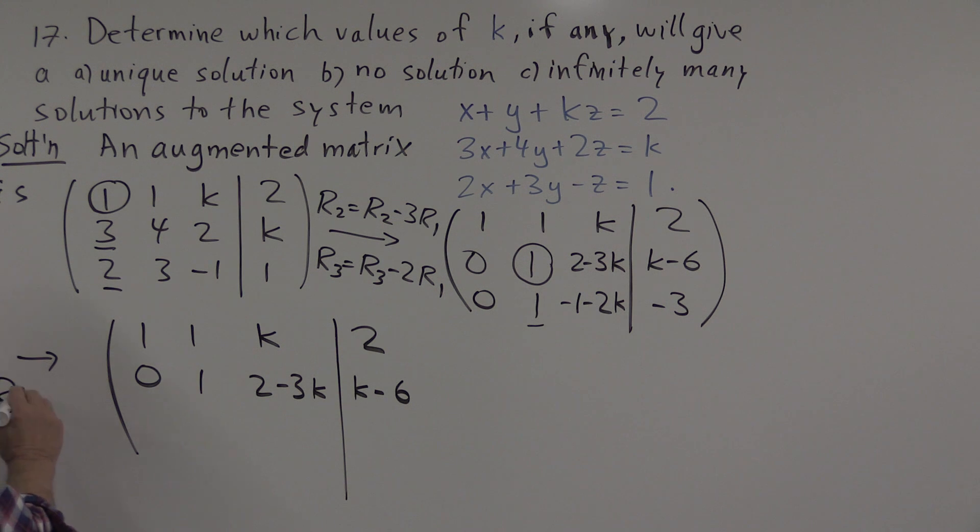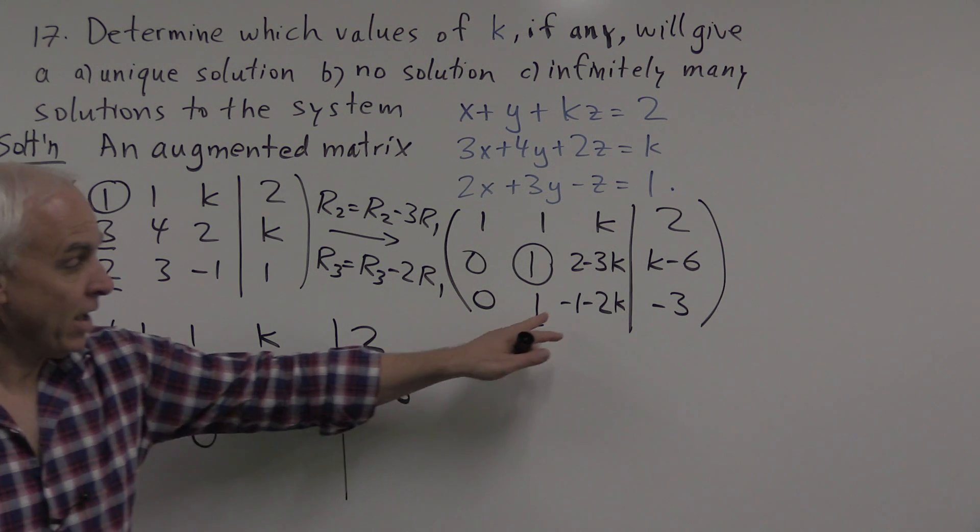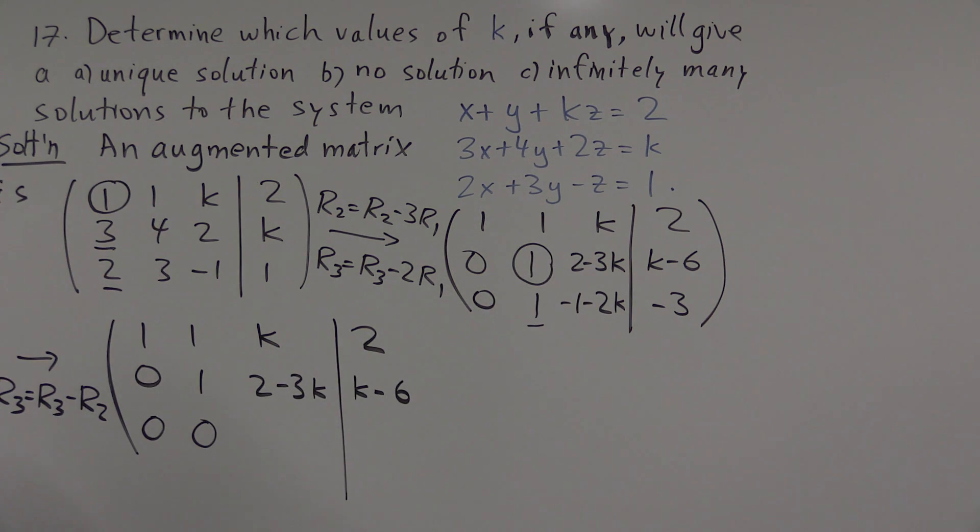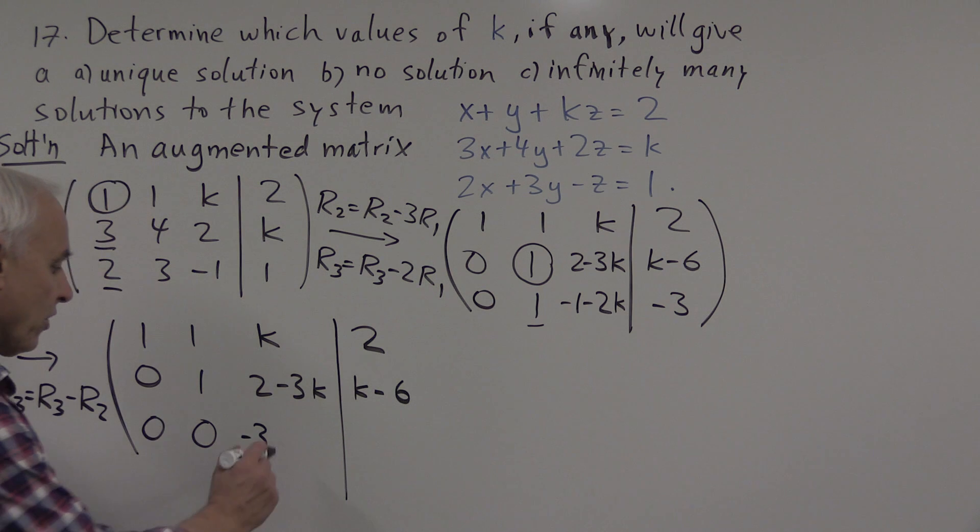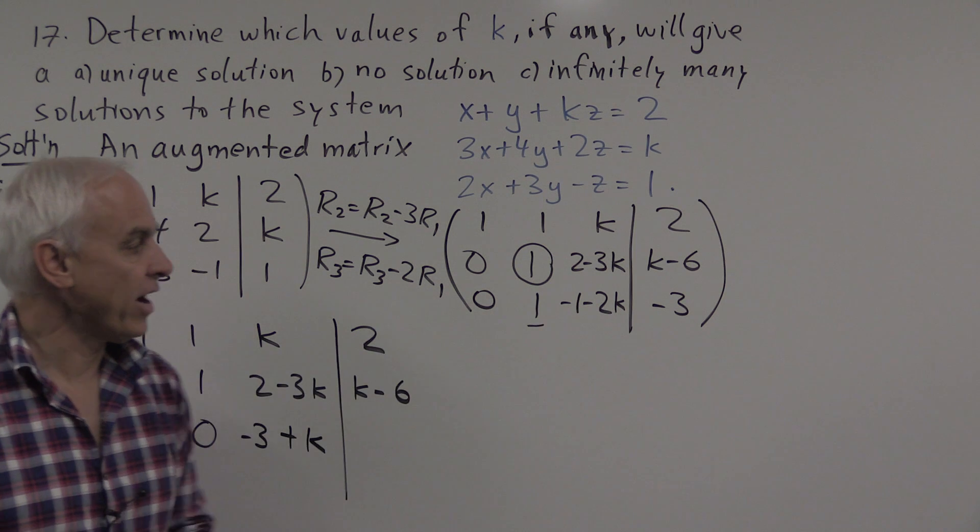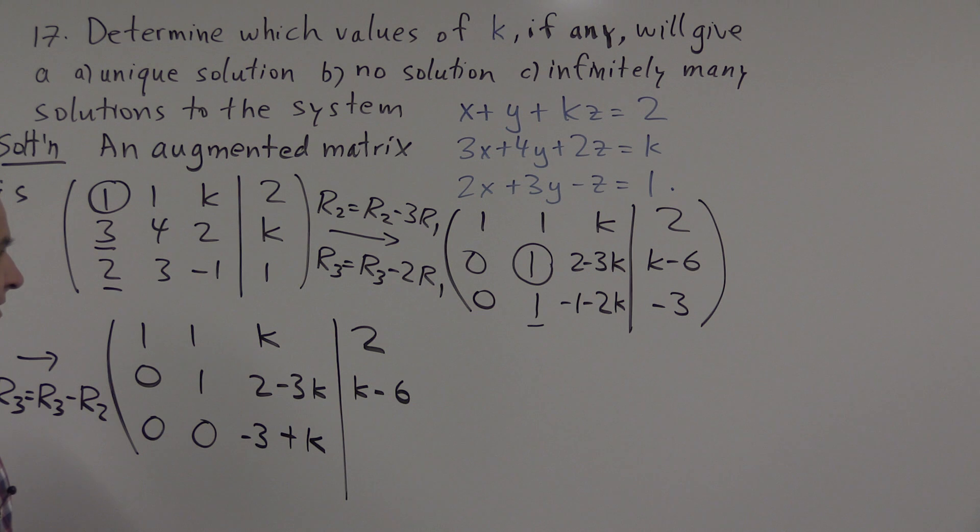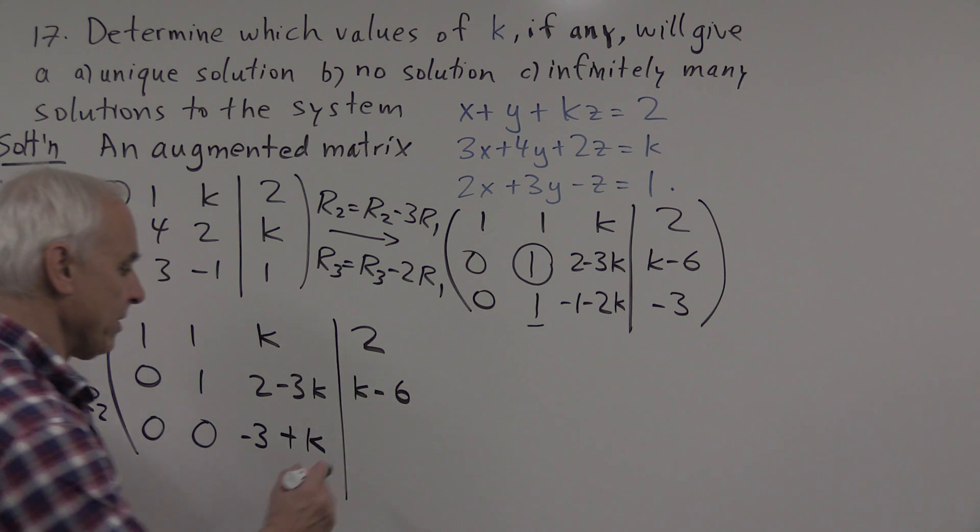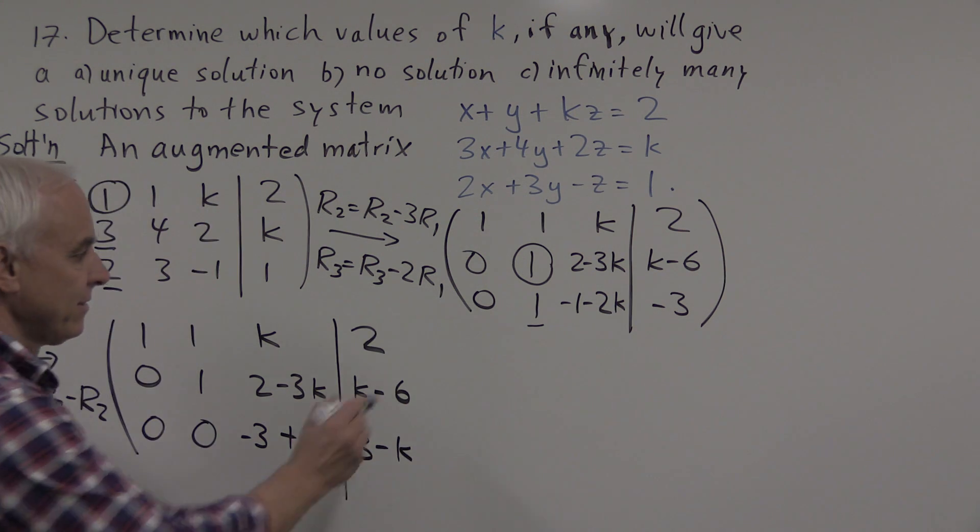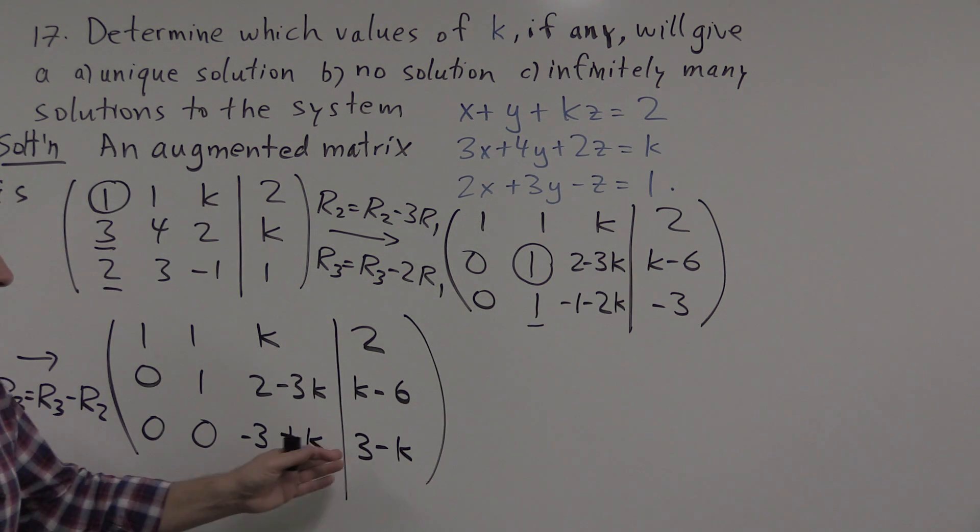We're going to take row 3 minus row 2. That'll give us 0. 1 minus 1 is 0. And then over here, we have minus 1 minus 2k minus 2 minus 3k. Minus 1 minus 2 will be minus 3. And minus 2k minus minus 3k will be minus 2k plus 3k for a total of plus k. And then over here on this side, we'll have minus 3, and then we have to subtract k minus 6. So minus 3 minus k minus 6, that's minus 3 plus 6, that'll be plus 3, and minus k. This thing minus this will be 3 minus k.